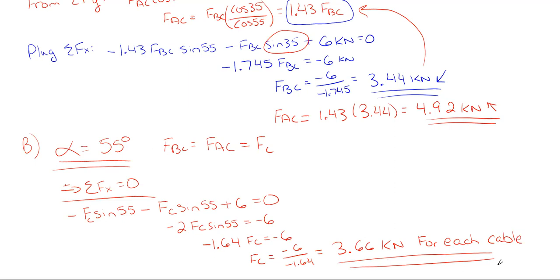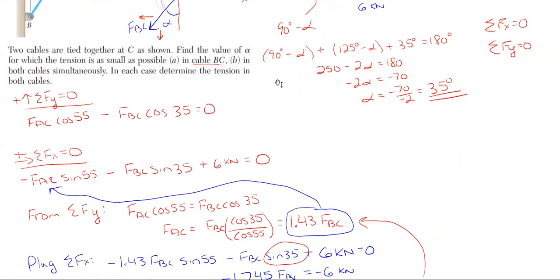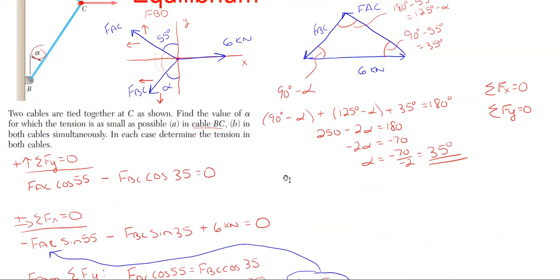The wording of that problem makes it seem more difficult than it actually is, especially part two. Just watch out for what's being asked and the tricks they try to throw in. For static equilibrium problems, the process is almost exactly the same regardless of wording: draw free body diagrams, sum forces in x and y, solve for variables, and optionally verify by plugging values back into the equilibrium equations to confirm you get zero.